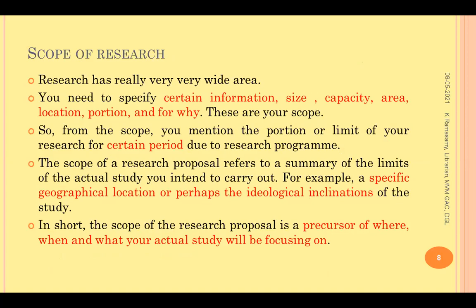Whenever you talk about any particular topic in any discipline, the research area is normally very broad. For example, library automation, digital libraries, information literacy skills, bibliometric aspects — these areas are very wide and you may not be able to conduct research on such wide areas. You have to create a defined border area of operation for your research — staying within those boundaries. That is what we call the scope of your research study. You are trying to restrict and make your research more specific and narrower.